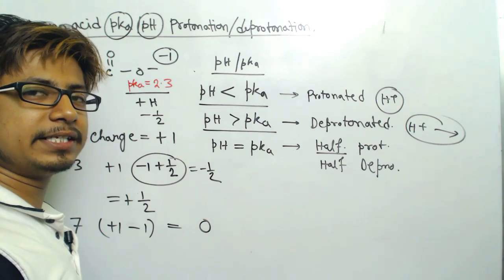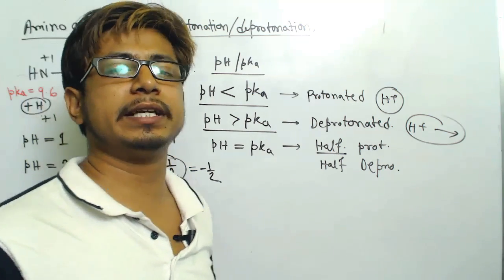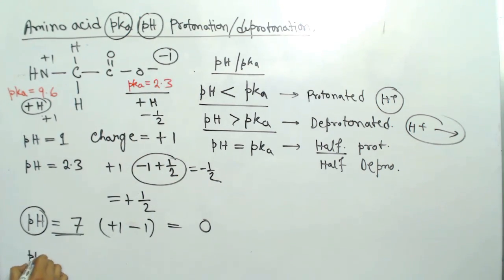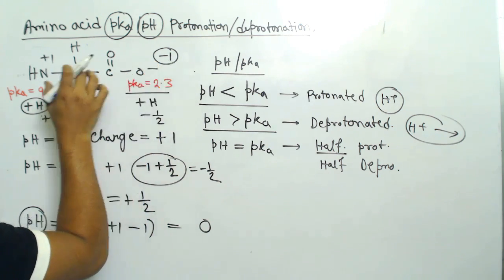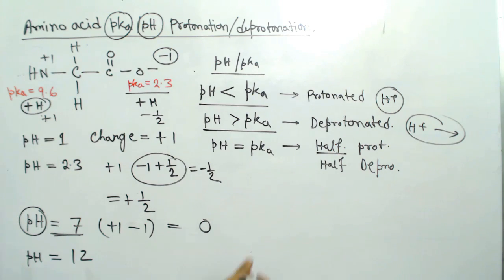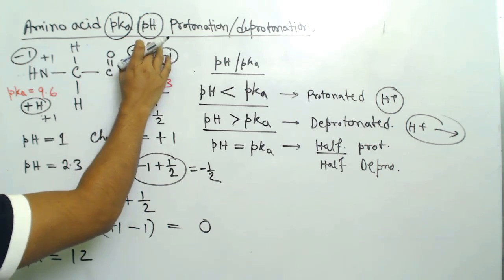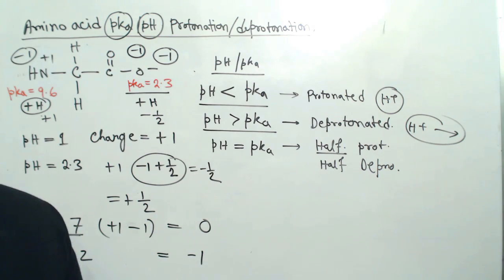The pH at which the net charge of an amino acid equals zero is called the pI (isoelectric point). For glycine, that is pH 7. At pH 12 — greater than both pKa values — deprotonation occurs at both groups. The carboxylate is already −1; the amine loses its proton, becoming neutral. The net charge at pH 12 is −1.